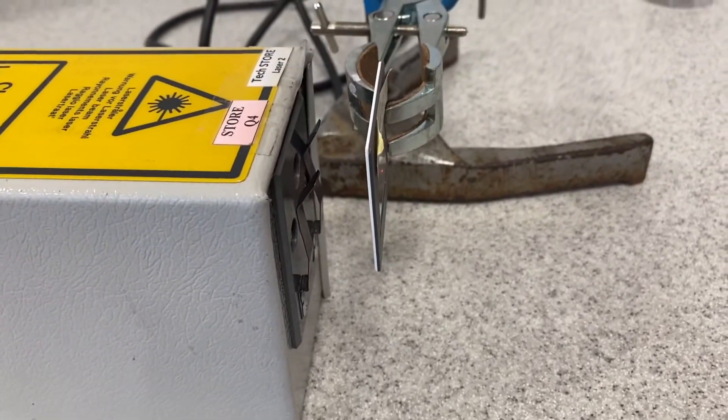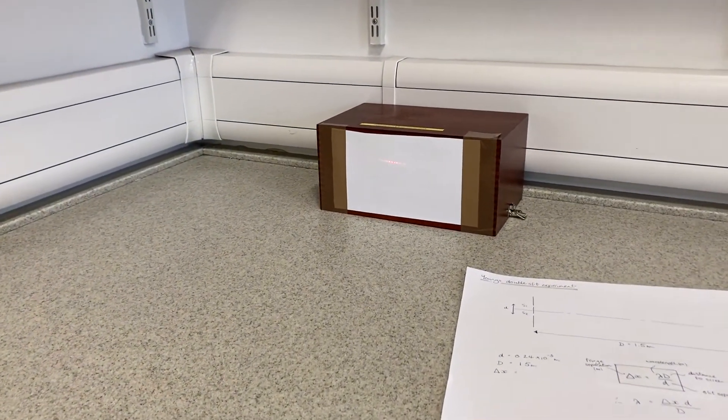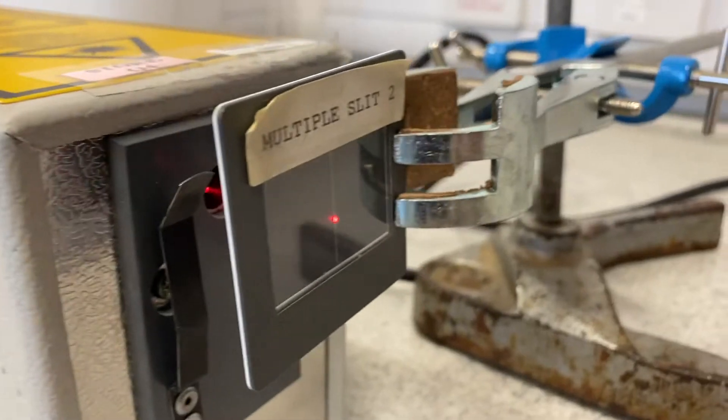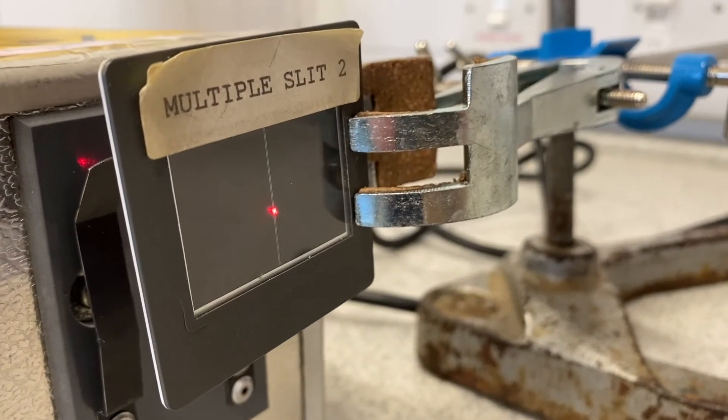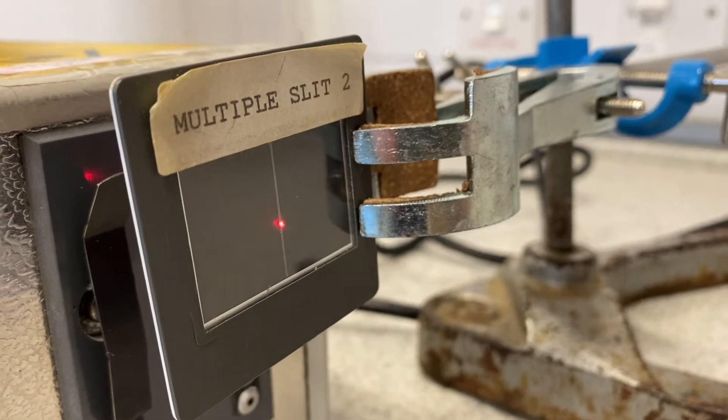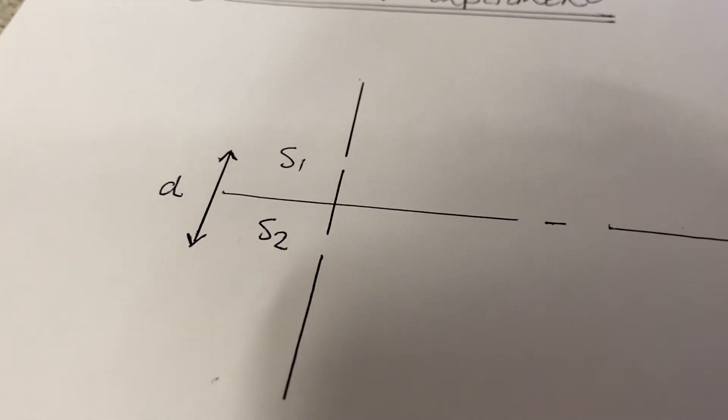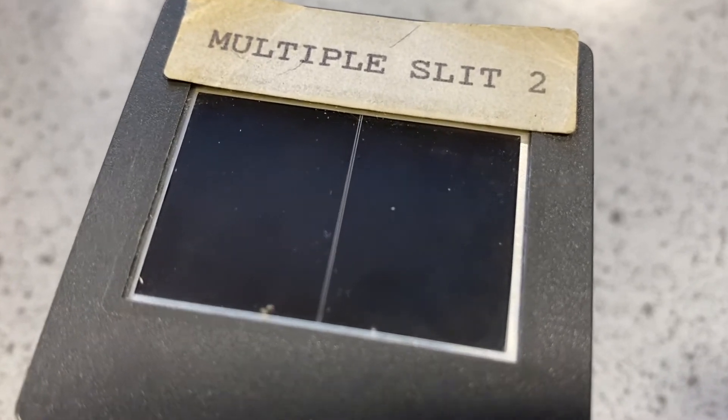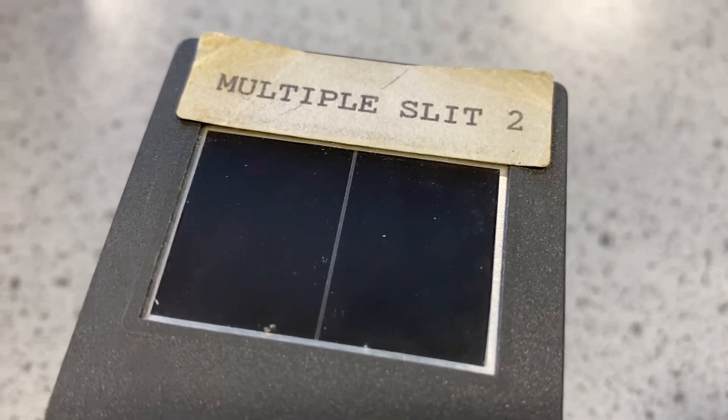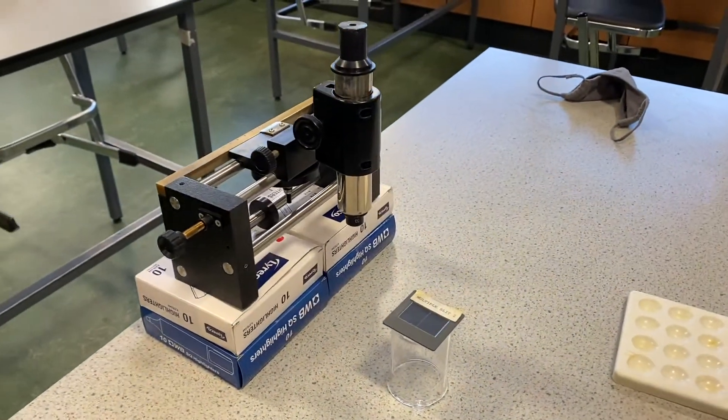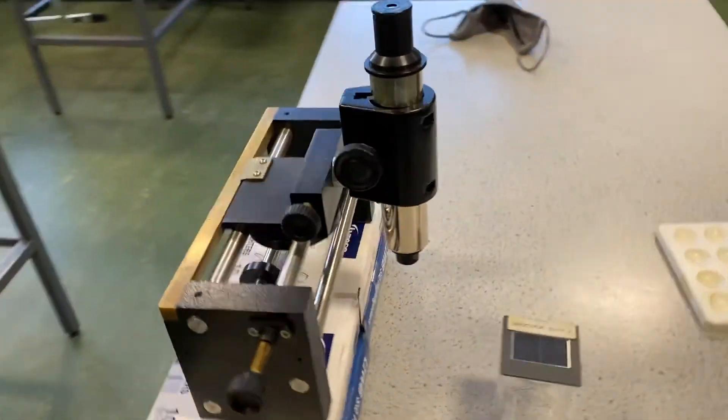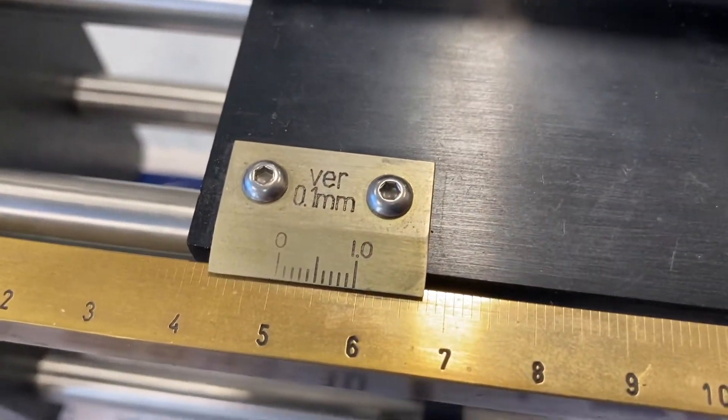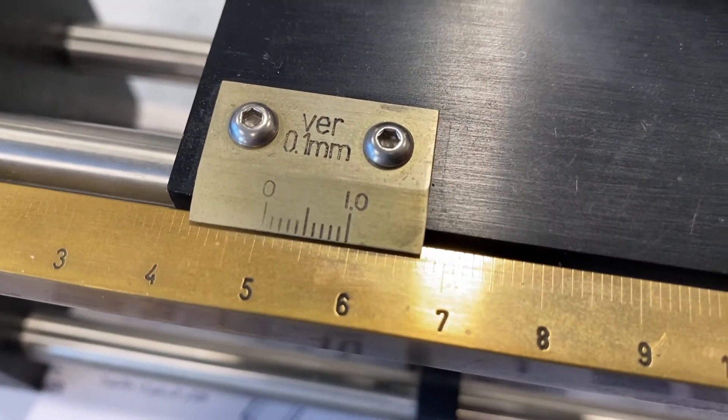I'm arranging my slit so that it's 1.5 meters away from the screen. The second thing we need to measure is the distance between the slits on the double slit. That's the slit separation. It's very small—there's no way we could measure the distance between those two slits with a ruler. So we're going to use a travelling microscope. The microscope's got a scale on it that will allow us to very precisely measure the distance between those two slits.